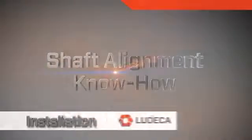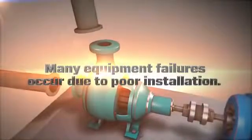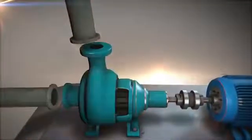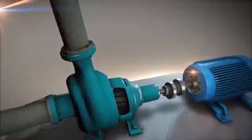Shaft alignment know-how. Installation. Many equipment failures occur during what is called the infant mortality period. In other words, soon after machines are first put in service and are typically due to poor installation.